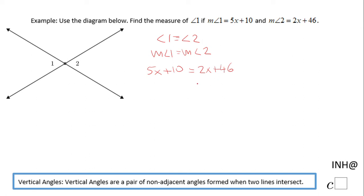I will personally subtract 2x on both sides and I have 5x minus 2x is 3x plus 10 equals 46. I'm going to subtract 10 on both sides to solve for x, right?